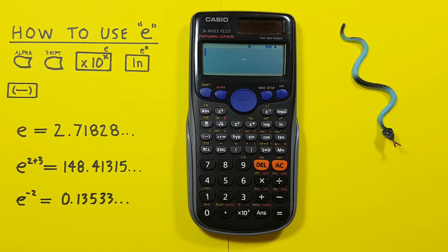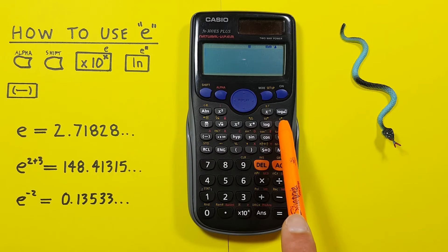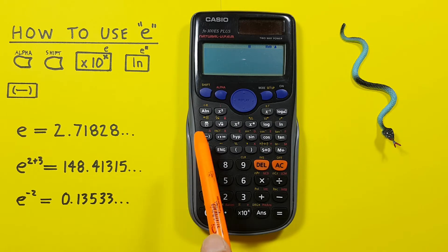The natural log or LN key with the shift function of E to the power of that looks like this, located here. And the E negative key that looks like this, located here.